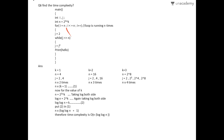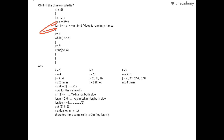For k equals 1, n equals 4. For n equals 4, the j loop runs two times because the while condition is satisfied only for j equals 2 and j equals 4. Since the outer for loop runs n times, the whole program runs n times 2 for k equals 1.